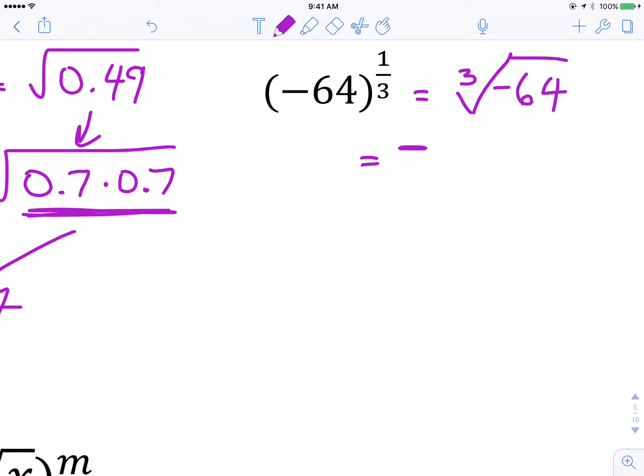Then I just think, well, I need the cube root of 64. Well, 64 breaks down into 4 times 4 times 4. There's our triple. It's just 4.